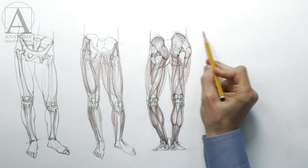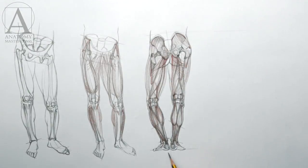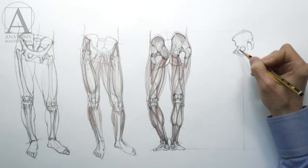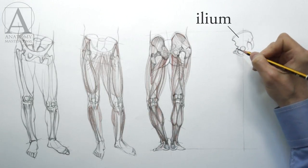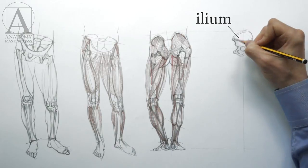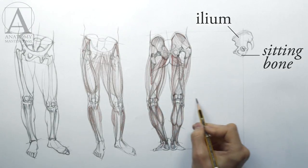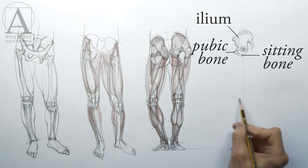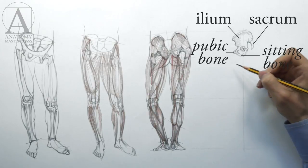Once again, I will begin with the skeletal anatomy. The pelvis consists of the ilium bones, the sitting bones, the pubic bone, and the sacrum.